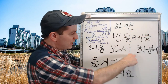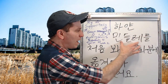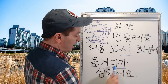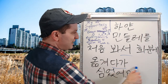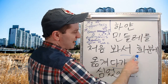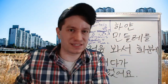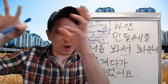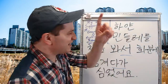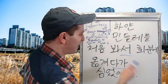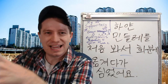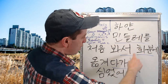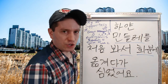하얀 민들레를 처음 봐서 — because I saw a white dandelion for the first time — 화분에 옮겨다가, so I moved it into a flower pot. 심었어요 — and then I planted it. I put it into a pot, moved it, and then planted it somewhere else. 하얀 민들레를 처음 봐서. 화분에 옮겨다가. 심었어요.